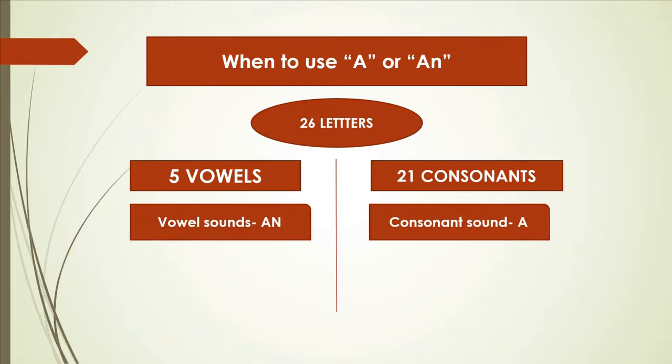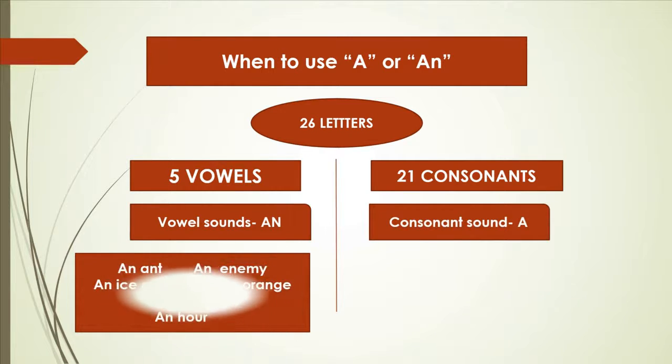If the noun sounds like a vowel at the beginning, we are going to use an. And if it sounds like a consonant, that means we are going to use a before that. For example, as you can see, we are going to use such examples like ant, we are using an before that because ant is beginning with a which is a vowel.